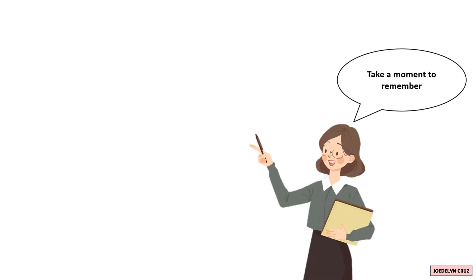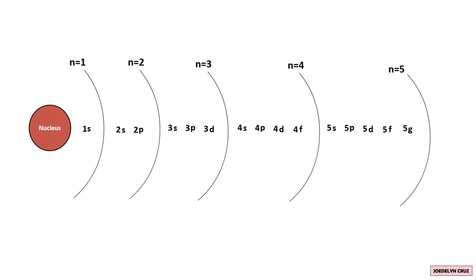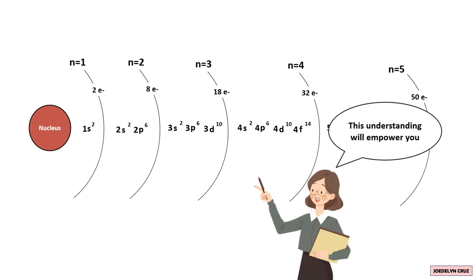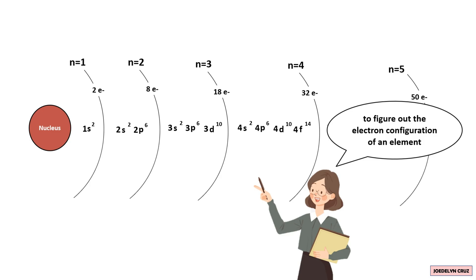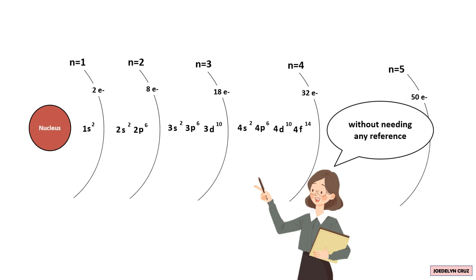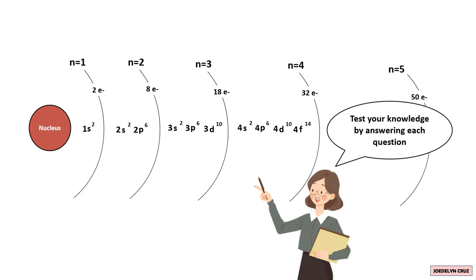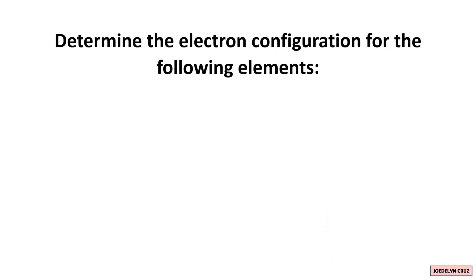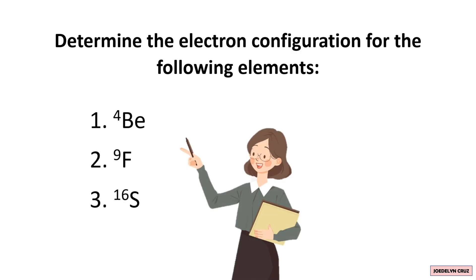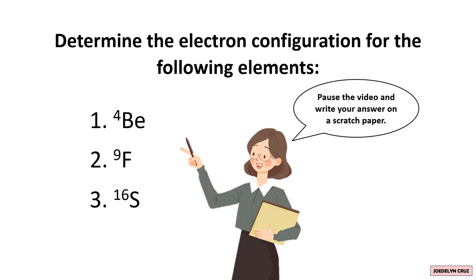Take a moment to remember the energy levels, sublevels in each energy level, and the maximum electrons each sublevel can hold. This understanding will empower you to figure out the electron configuration of an element without needing any reference. Now, test your knowledge by answering the following question without looking at the illustration or the matrix. Determine the electron configuration for the given elements, pause the video, write your answer on a scratch paper, then resume to reveal the correct answer.